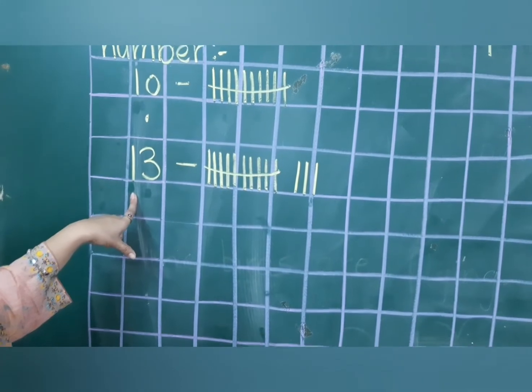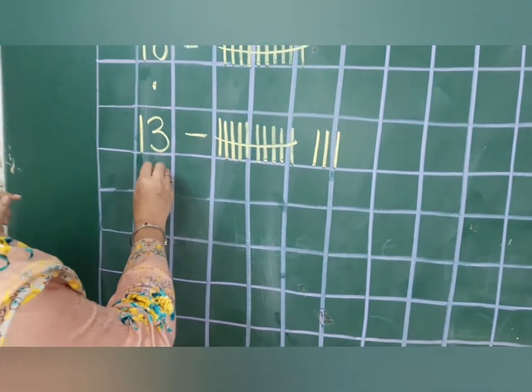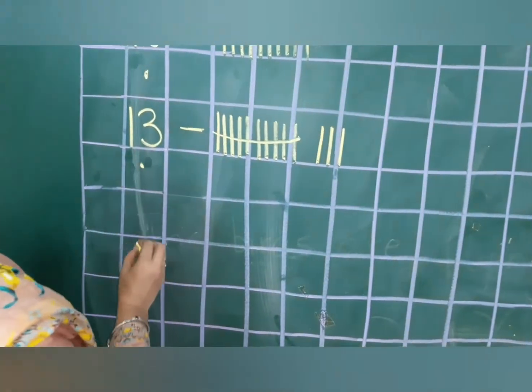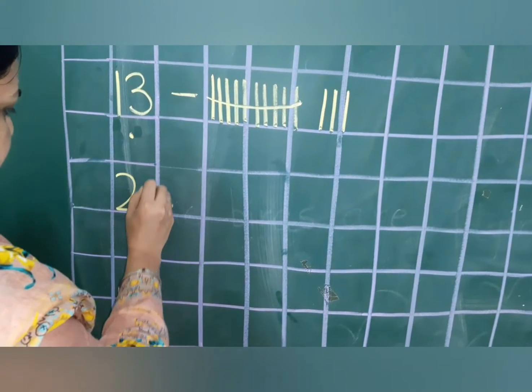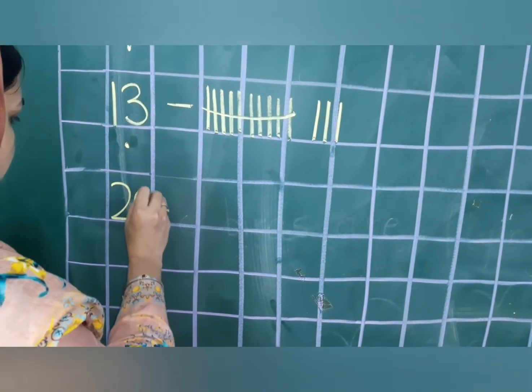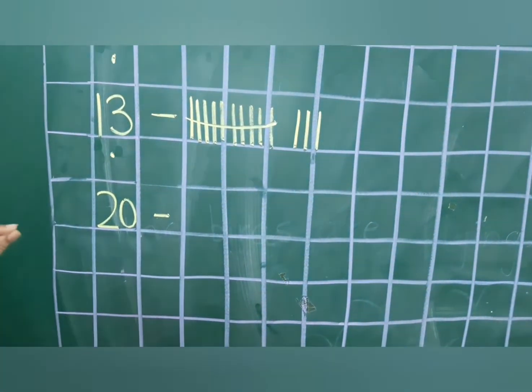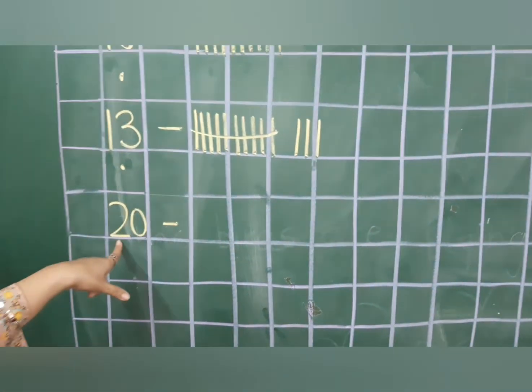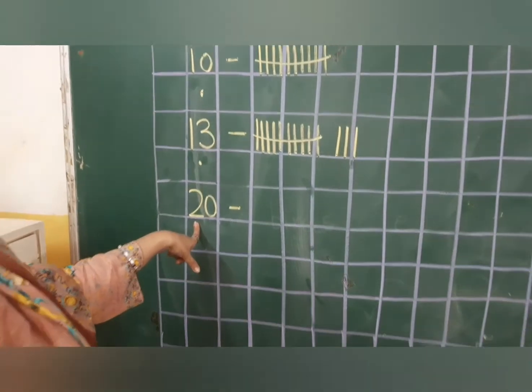One bundle and three loose sticks is thirteen. Now our next number is twenty.